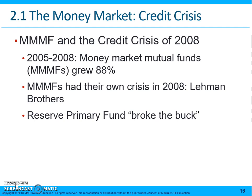Money market mutual funds typically sell shares at a value of one dollar, and Lehman's fund fell below that. Investors ultimately got about 97 cents on the dollar of what they had invested.